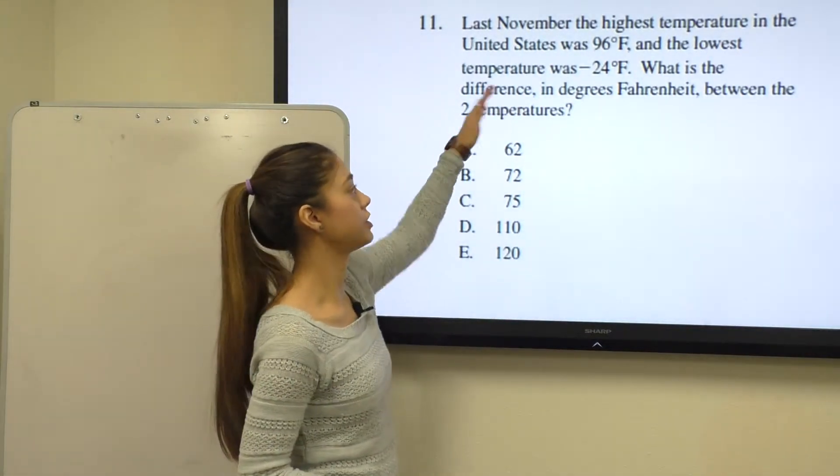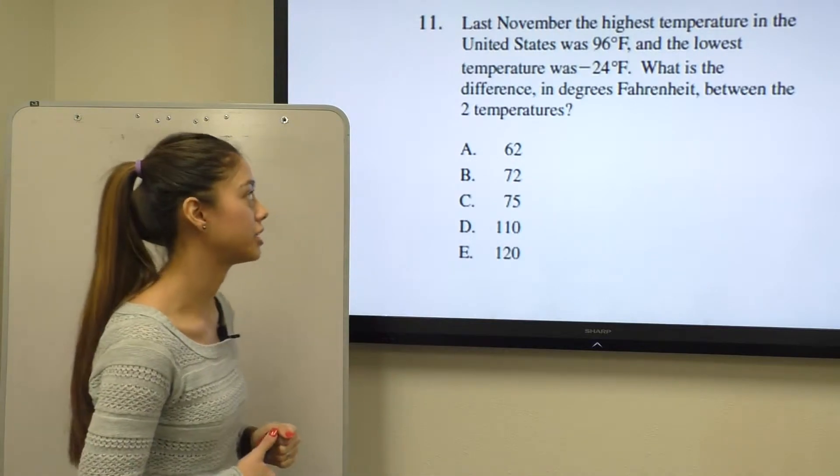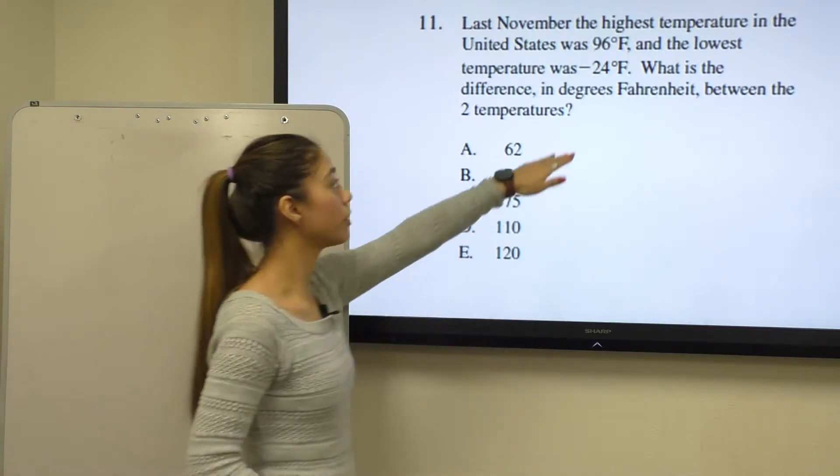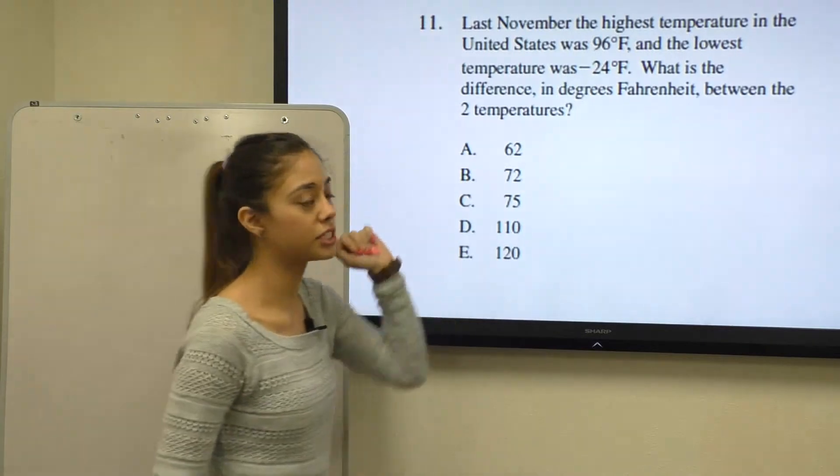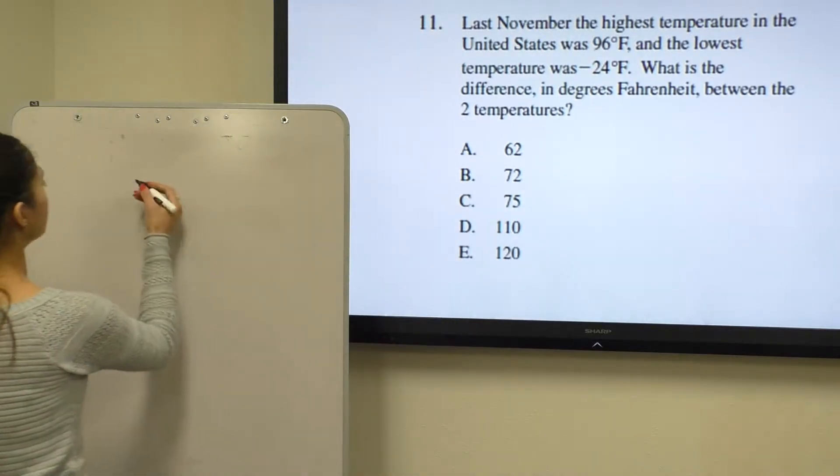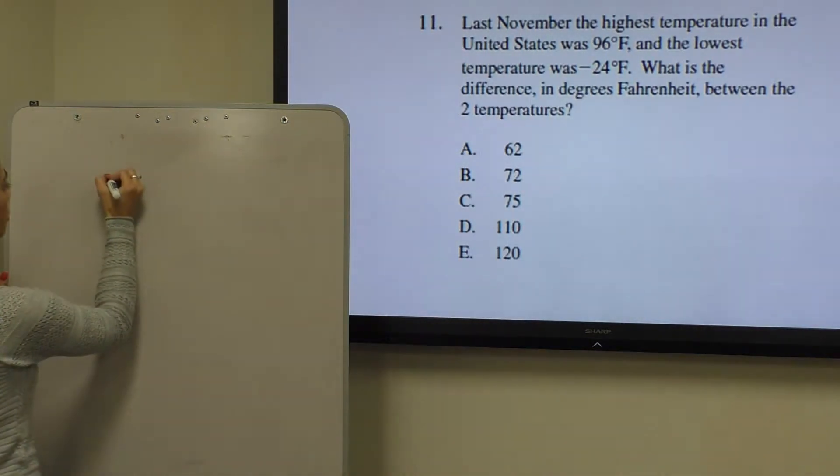So we're going to subtract the smaller number, which is negative 24 degrees, from the bigger number, which is 96. So we have 96 degrees minus negative 24 degrees.